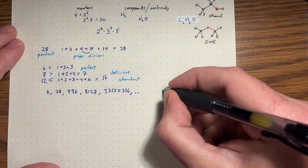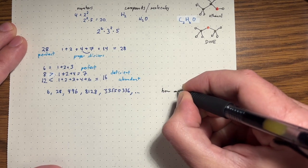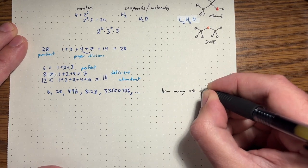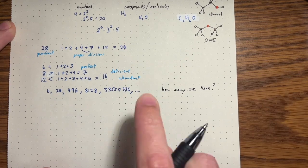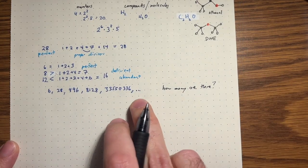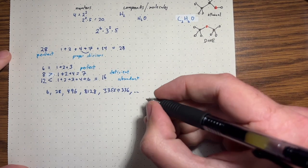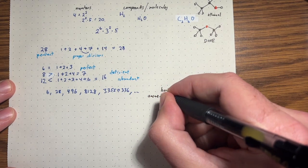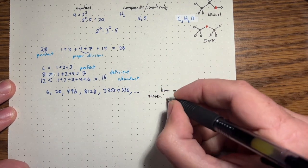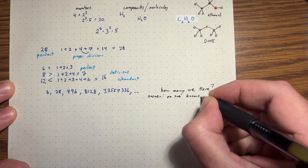So the real question is, how many are there, right? Are there infinitely many, or do they stop at some point? Is it impossible to keep producing perfect numbers? And the answer to this is no one has any idea. No one knows. Nobody knows.